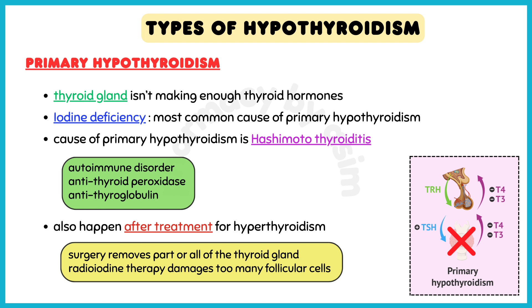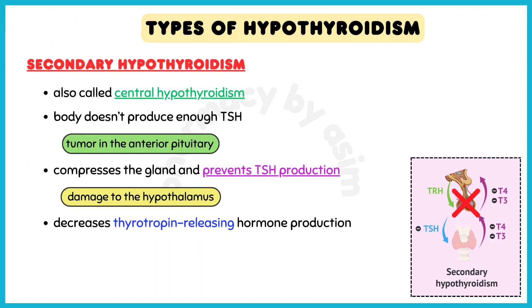Another type of primary hypothyroidism is when it affects a newborn, in which case it's called congenital hypothyroidism. In secondary hypothyroidism, also called central hypothyroidism, the issue is that the body doesn't produce enough TSH. It typically happens because there is a tumor in the anterior pituitary which compresses the gland and prevents TSH production, or because there is damage to the hypothalamus from tumors or trauma which decreases thyrotropin-releasing hormone production.